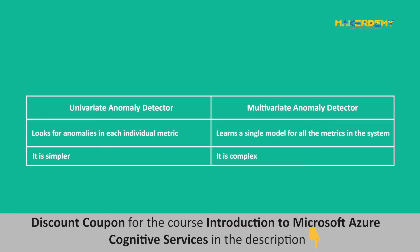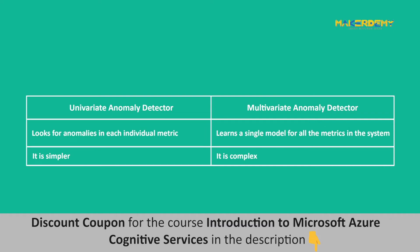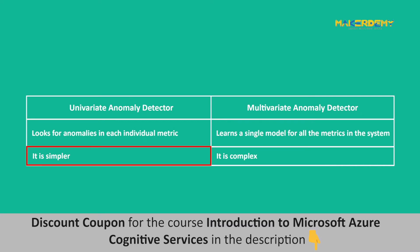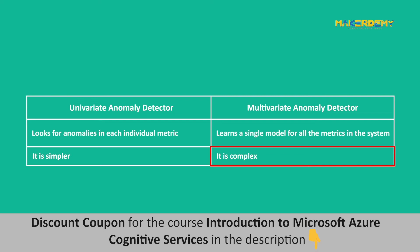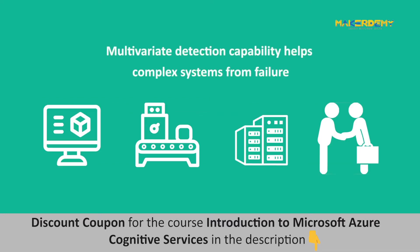Multivariate Anomaly Detector: The multivariate anomaly detection APIs have been developed recently and are still in preview. A univariate anomaly detector looks for anomalies in each individual metric, while a multivariate anomaly detector learns a single model for all the metrics in the system. Univariate detection is simpler compared to multivariate detection, so it is easier to scale to many metrics and large data sets for simpler systems.